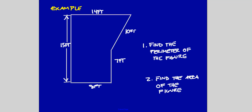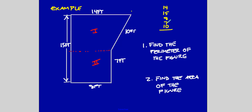Here's another example: find the perimeter of the figure. This appears to be a trapezoid on top and a rectangle on the bottom — that's how I would treat it for area. Let's find the perimeter first: 14 plus 15 plus 8 plus 7 plus 10. Adding those up gives a perimeter of 54 feet.